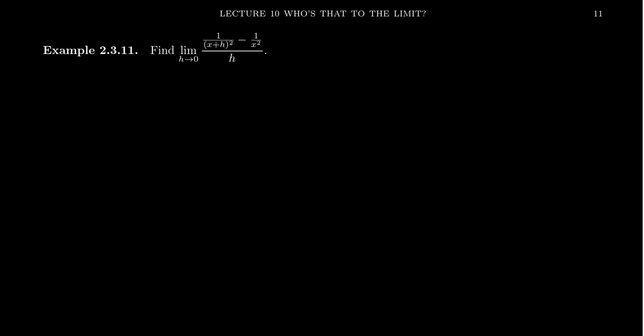Now you'll notice in this setting here, we have the limit as h approaches 0 of 1 over (x+h)² minus 1 over x² all over h. If you were just to plug in h equals 0 in this setting, because that's a very smart thing to do when you have a limit, just plug it in and see what happens.